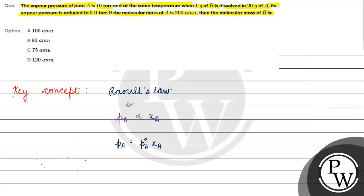Now, if we talk about P_A, P_A is 9 torr, because when we add a solid solute, the vapor pressure of the solvent is reduced to 9 torr. How much is P°_A? It is 10. So x_A, that means the mole fraction of A, will come out to be 9 by 10, which means 0.9.